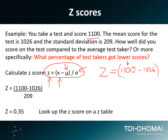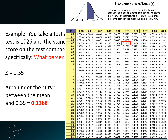So it's 1100 minus 1026. You can see that you'll get a negative value if your score is below the mean — for example, 1000 minus 1026 would give you negative 26. The standard deviation is 209, so we divide that by 209. Using a calculator, you'll get z equals 0.35.